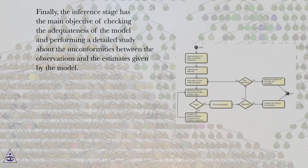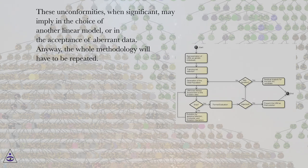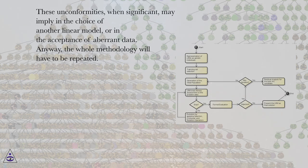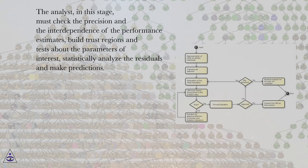Finally, the inference stage has the main objective of checking the adequateness of the model and performing a detailed study about the unconformities between the observations and the estimates given by the model. These unconformities, when significant, may imply in the choice of another linear model, or in the acceptance of aberrant data. Anyway, the whole methodology will have to be repeated. The analyst, in this stage, must check the precision and the interdependence of the performance estimates, build trust regions and tests about the parameters of interest, statistically analyze the residuals and make predictions.